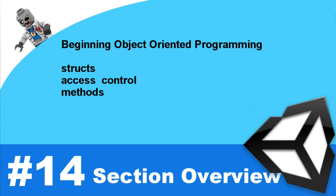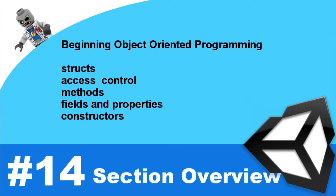Then we'll cover methods. Methods are a way to allow your objects to do something — if an object is a noun, the method is the verb. So you can say 'dog run' or 'boy sleep'. Then we'll cover fields and properties, and you'll see how they work with methods and access control. Properties are great because they take a lot of the boilerplate code and handle it for us. Then we'll learn about constructors — what it means to create constructors for our objects. And interfaces are a way to give behavior to objects that aren't related to each other, allowing two different types of objects to share similar behavior.